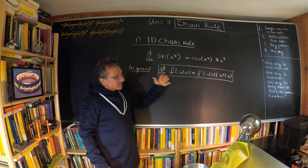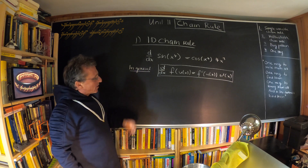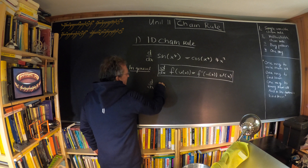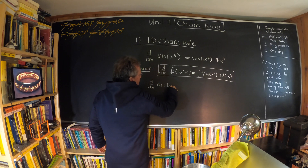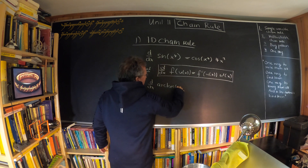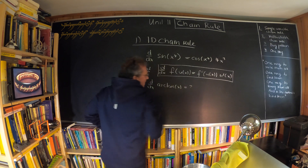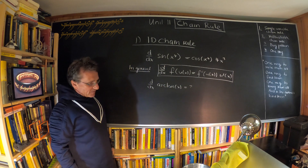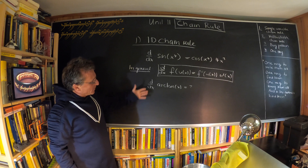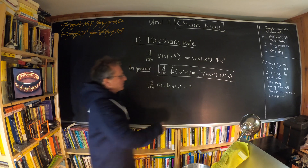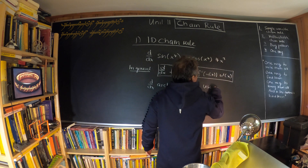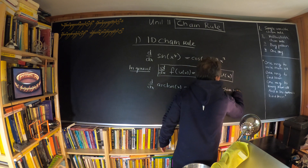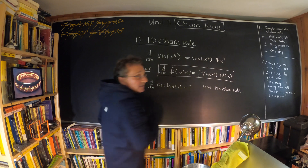Even though you're familiar with it, it's a very useful rule. For example, if you forget the derivative of arctan, we can use the chain rule to derive it.